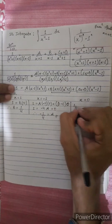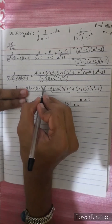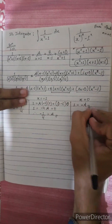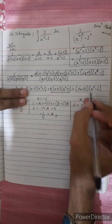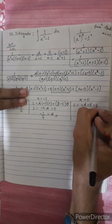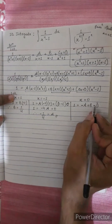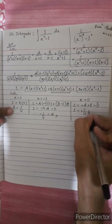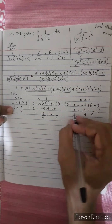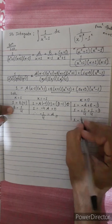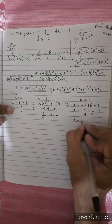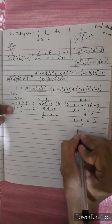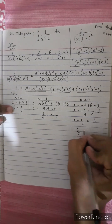Substituting x equals 0 into the main equation, and plugging in A equals minus 1/4 and B equals 1/4, we solve to get: 1 minus 1/2 equals 1/2, which gives minus d equals 1/2. Therefore d equals minus 1 over 2.